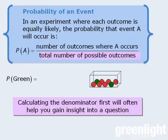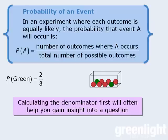We'll begin by determining the total number of possible outcomes. Since there are eight balls in total, there are eight equally likely outcomes when a ball is randomly selected. Next, we'll examine the numerator — how many of those eight outcomes result in a green ball being selected? Since two of the eight balls are green, there are two possible outcomes where a green ball can be selected. When we simplify two-eighths we get one-quarter, or 0.25. So the probability that the selected ball will be green is one-quarter, or 0.25.